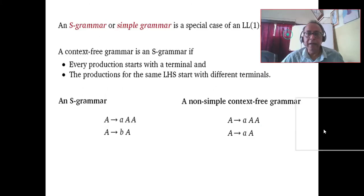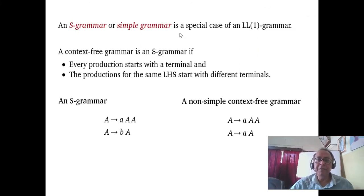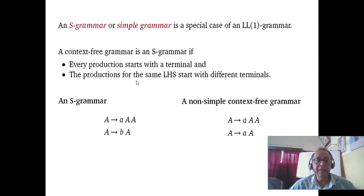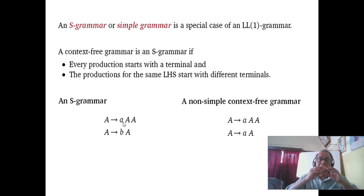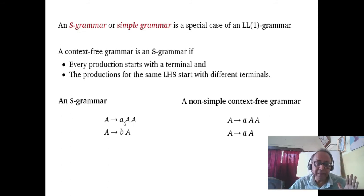Another interesting grammar is called S grammar or simple grammar. A context-free grammar is an S grammar if every production starts with a terminal — like in Greibach Normal Form — and the productions on the same left-hand side start with different terminals. Here it is first of all a Greibach Normal Form. It is an S grammar because if we see the terminal from the left-hand side — seeing a single terminal — we can act at once, knowing exactly which rule to use. That is very easy for parsing.